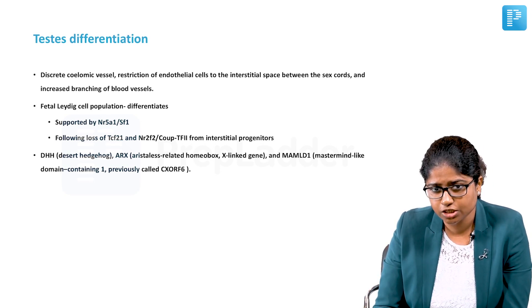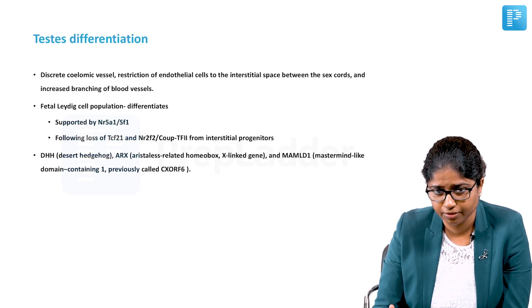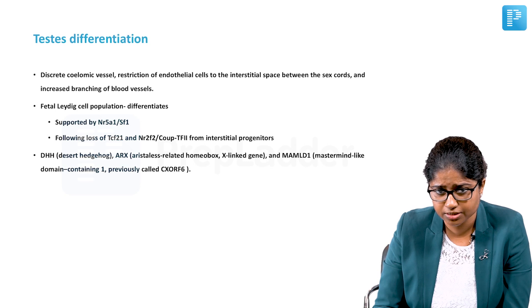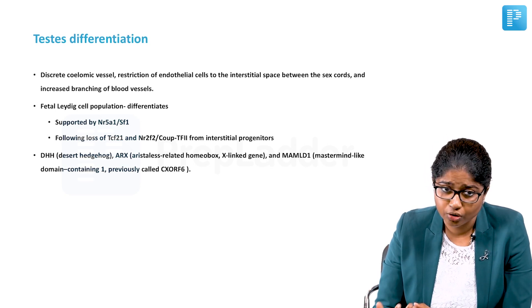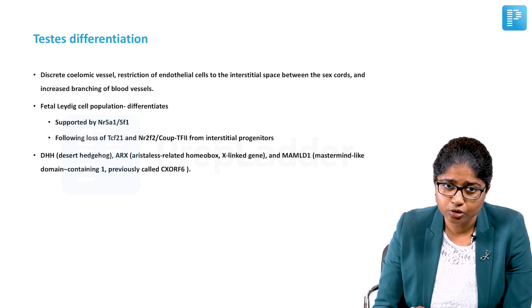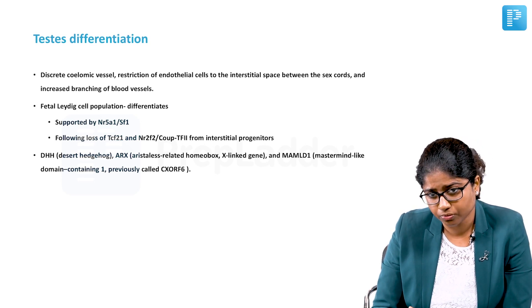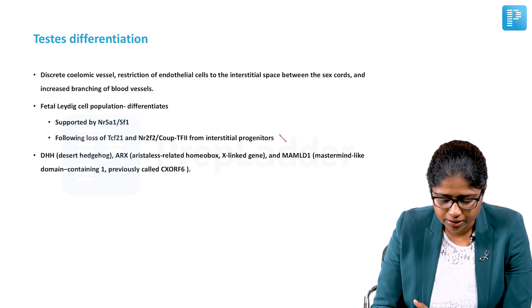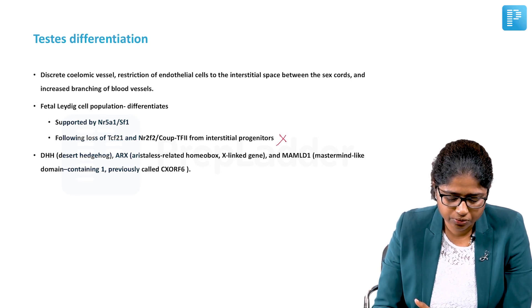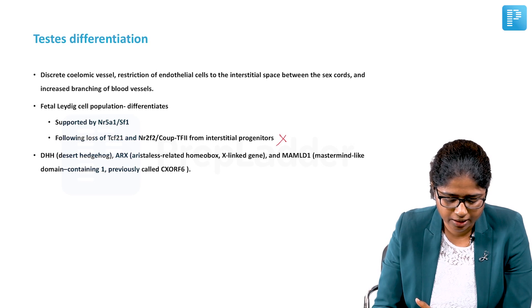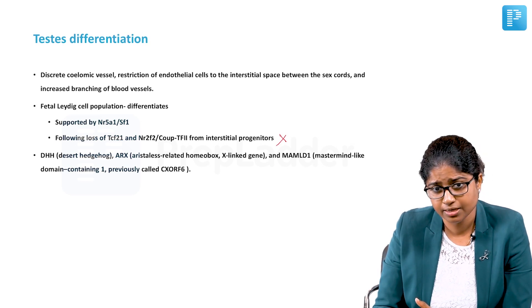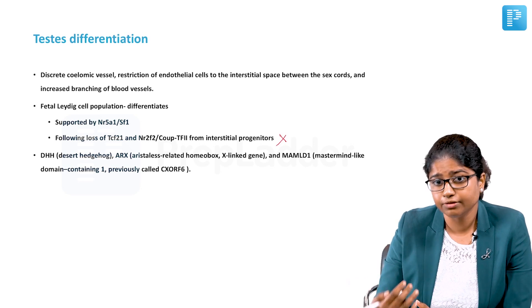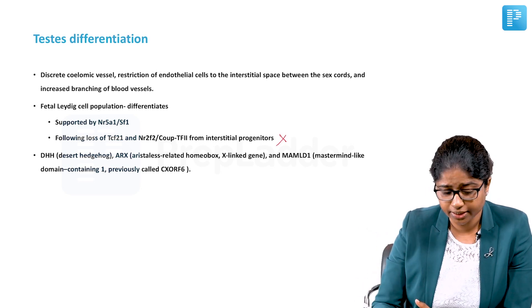This happens from the interstitium of the bipotential gonad, which is supported by the NR5A1 and the SF1 factors. It occurs following the loss of the TCF21 and the NR2F2, the COUP-TF2, from the interstitial progenitor cells. This may not be that important. You need to know that it is supported by NR5A1 and SF1 and it is also supported by the loss of certain factors. Other important transcription factors that are required: the desert hedgehog, the ARX gene, the MAMLD1 gene.